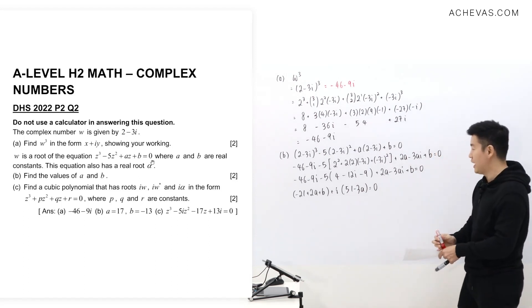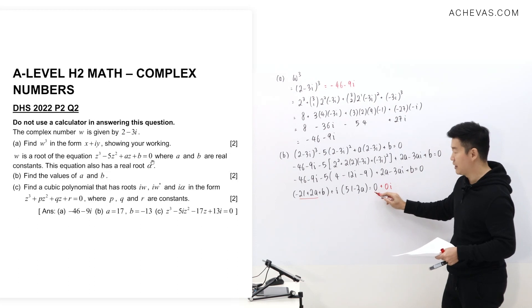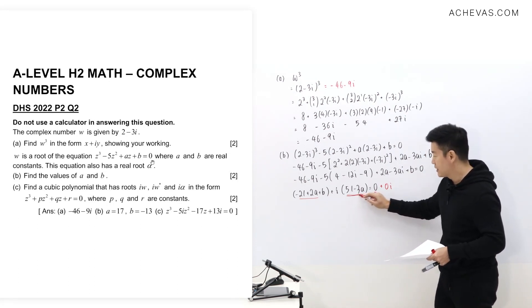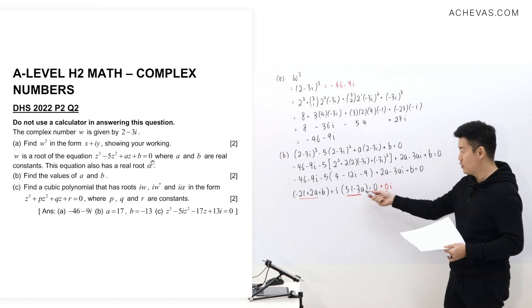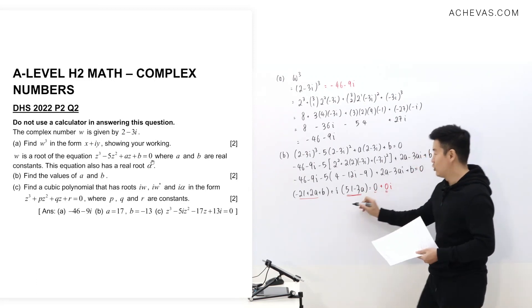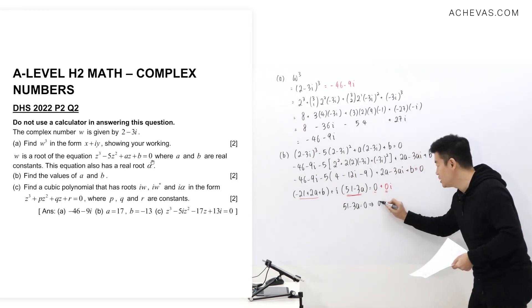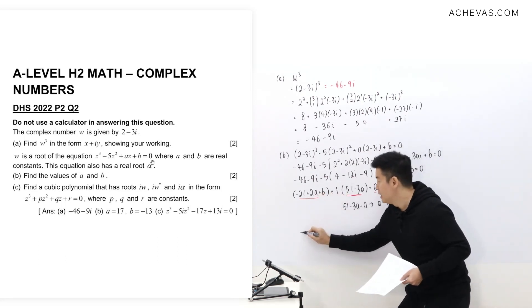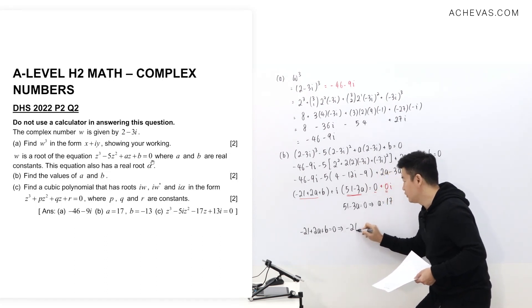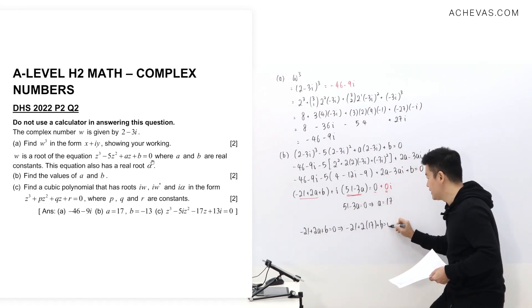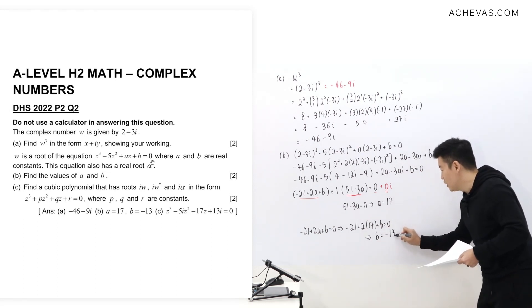We can see 0 as 0 plus 0i, so we match real and imaginary parts separately. Matching the imaginary part first: 51 minus 3a equals 0, which gives a equals 17. Then matching the real part: negative 21 plus 2a plus b equals 0, substituting a equals 17 gives negative 21 plus 34 plus b equals 0, so b equals negative 13.